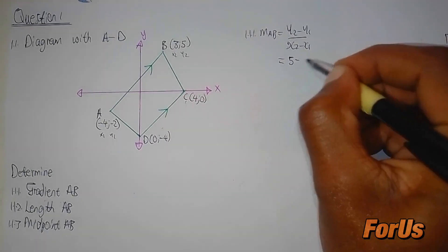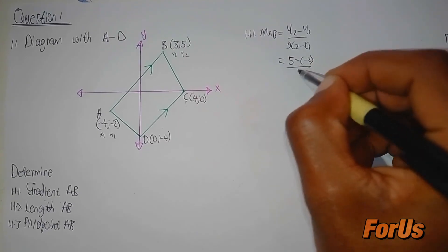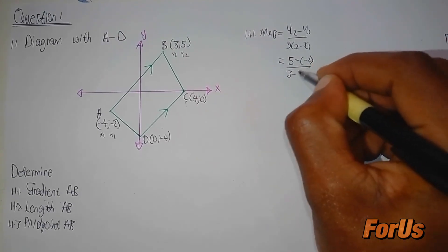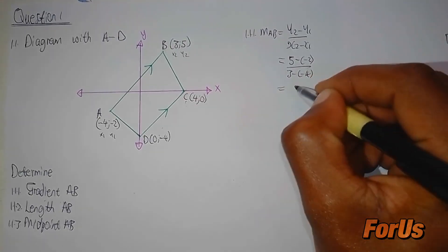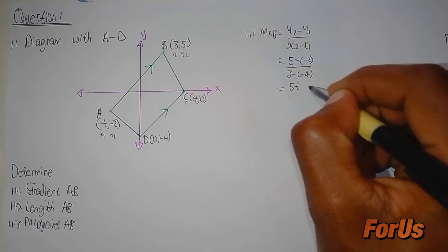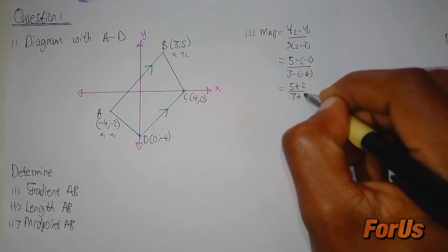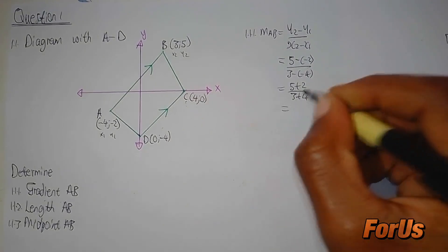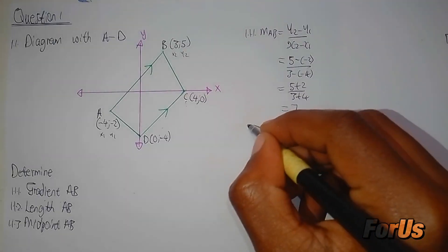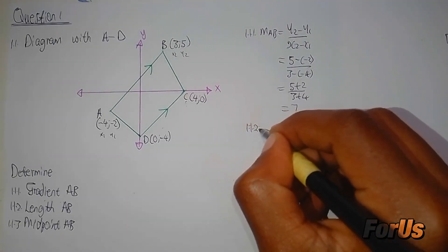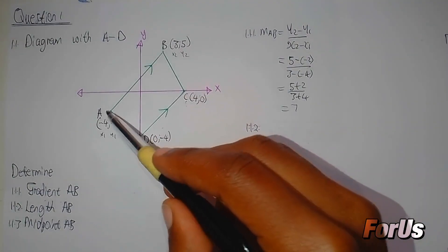Substituting into the gradient formula: 5 minus negative 2 divided by 3 minus negative 4, which gives 5 plus 2 over 3 plus 4, which equals 7 over 7. Now for question 1.1.2, we need to determine the length AB.